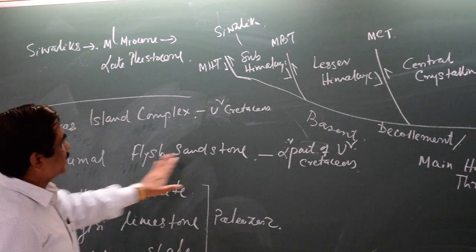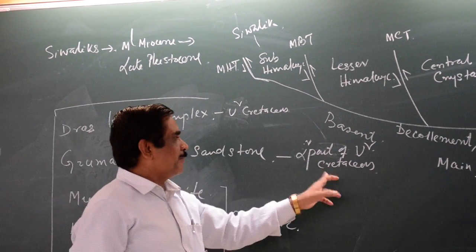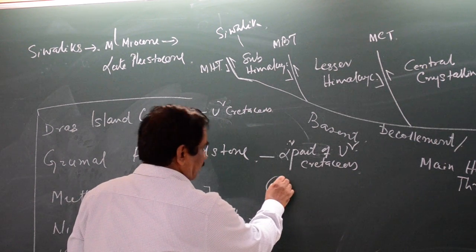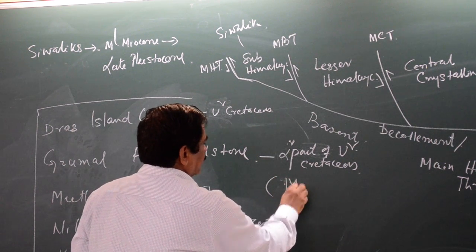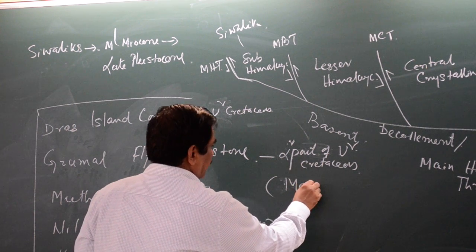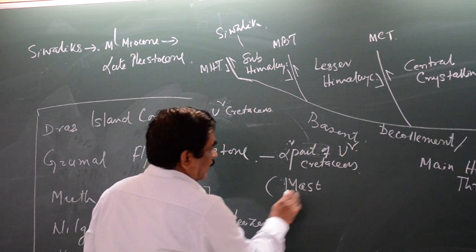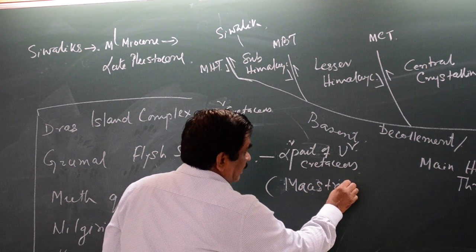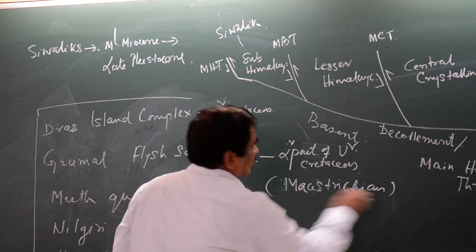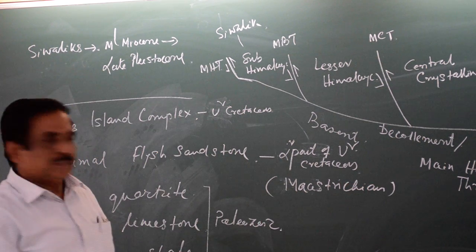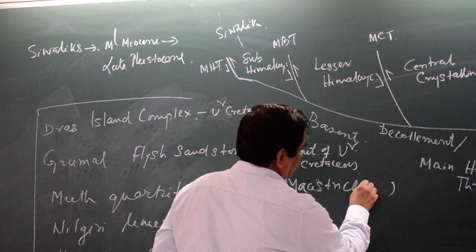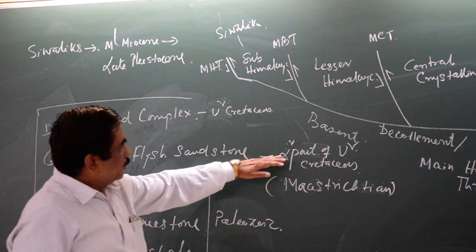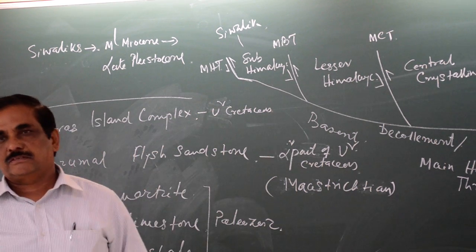Humong flysch sandstone, lower part of Upper Cretaceous. I am ready to recollect that name — Maastrichtian. Can you spell this? M-A-A-S-T-R-I-C-H-T-I-A-N. Let's get this spelling: C-H-T-I-A-N. 1, 2, 3, 4, 5, 6 — beginning of our practice.